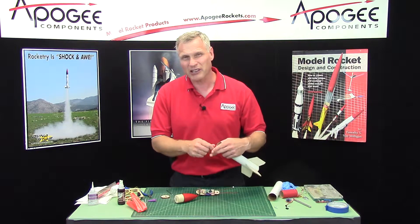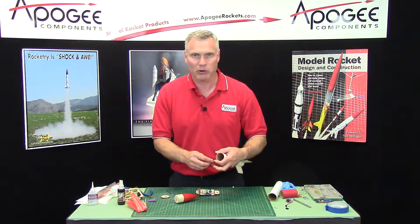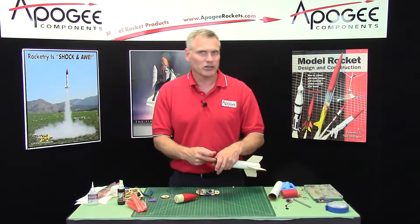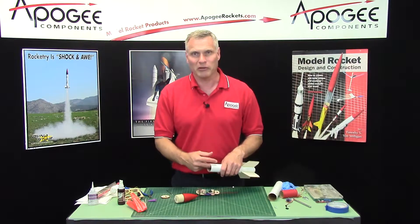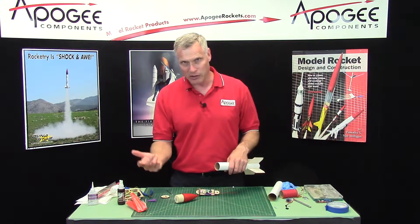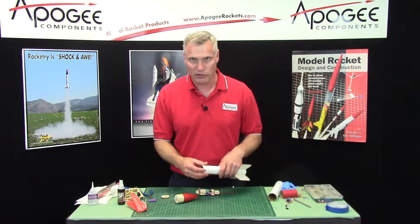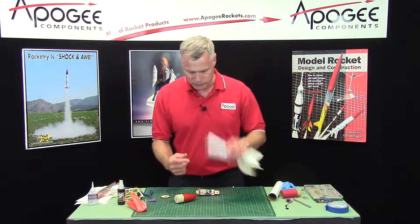On a 13mm rocket, like on an Estes Big Bertha with a C engine, you're really only going to get 400 feet and by the time the main parachute comes out it's going to be so close to the ground it's going to be scary, so don't use that.